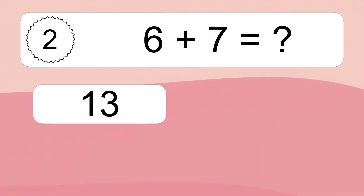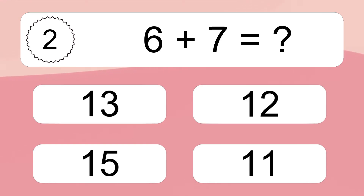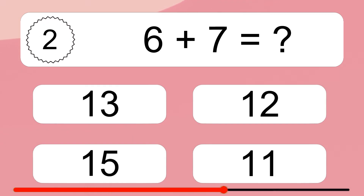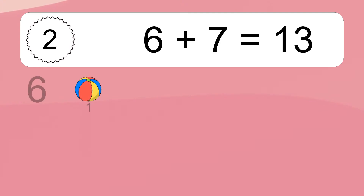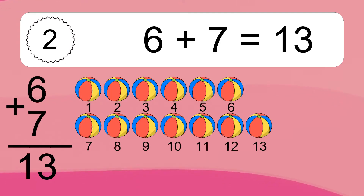6 plus 7 equals what? 6 plus 7 equals 13.